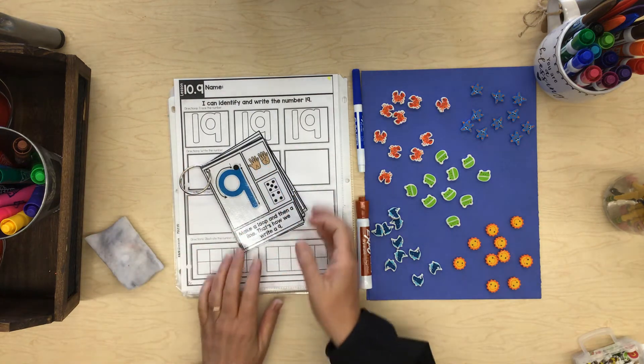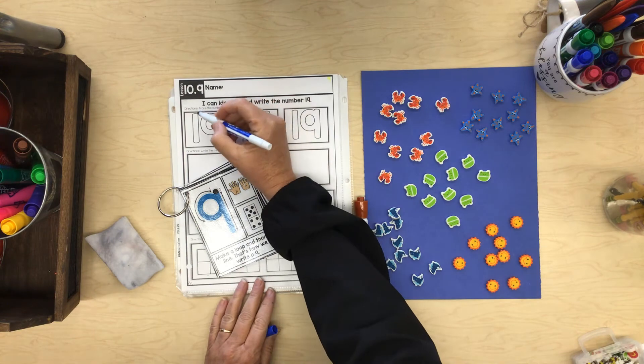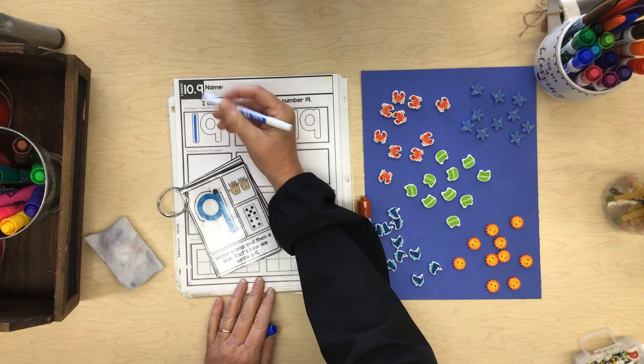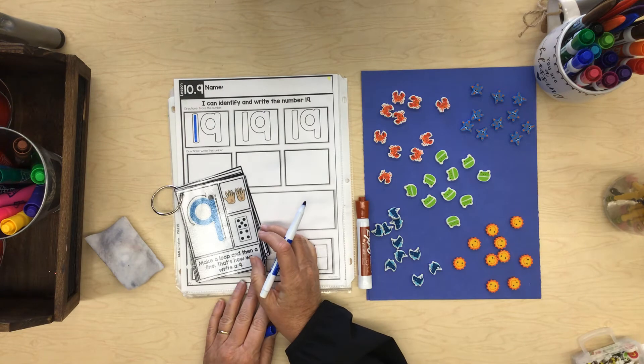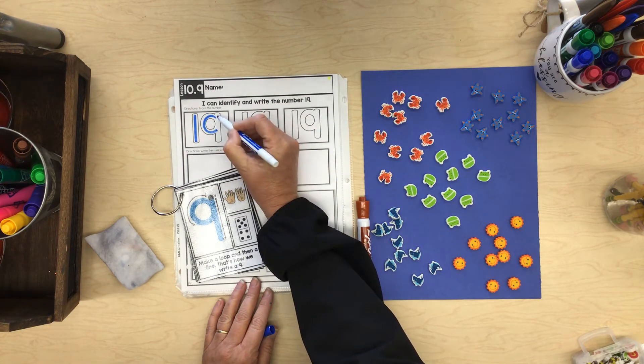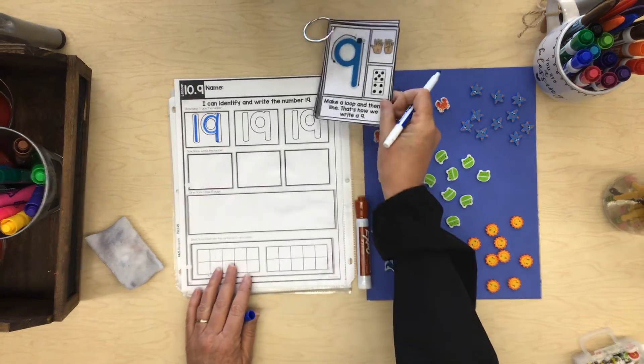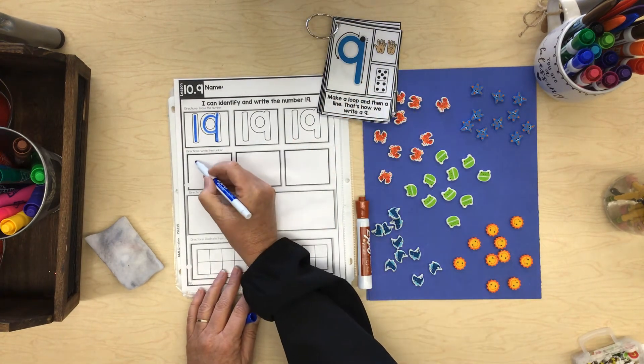10 and 9 more. Make the number 19. Let's trace our 19. Straight down, then you're done. That's how you write a 1. Make a loop, then a line. That's how we write a 9. And practice that on your own.